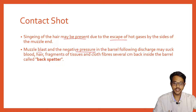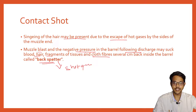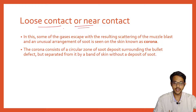Singeing of hair may be present due to escape of hot gases at the side of the muzzle end. Muzzle blast — the fire coming from the barrel — creates negative pressure in the barrel, following which it sucks blood, hair, fragments of tissue, and cloth fibers several centimeters into the barrel. This is called back spatter, and is also seen in shotgun wounds.